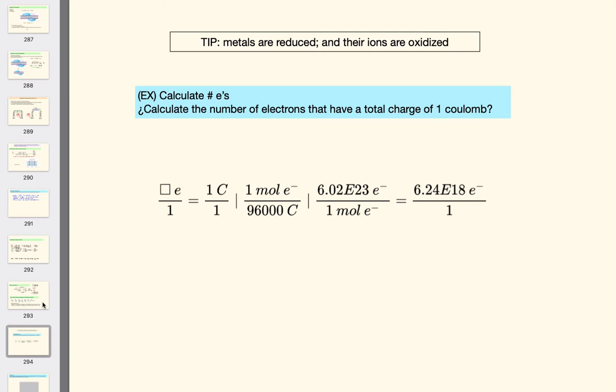Simple problem. Calculate the number of electrons that have a total charge of one coulomb. Let's analyze that. It's asking you for the number of electrons. And it only gives you one given value, and that is you're starting with one coulomb. So you set up the dimensional analysis that reads, how many electrons do I get starting with one coulomb?